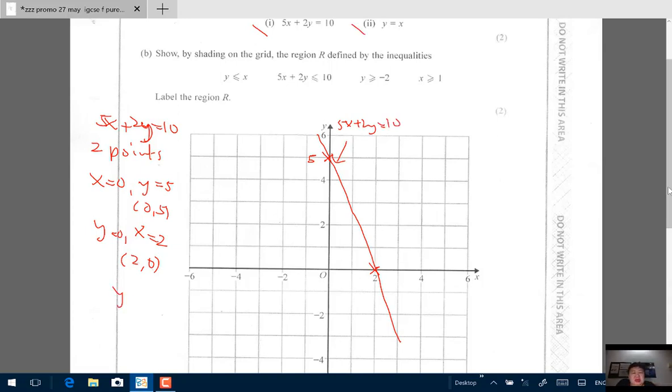y equals x is easy. It's a straight line where all the x and the y coordinates are the same, are equal. So you could pick (0,0), maybe you could pick (3,3) or (4,4), (5,5), (6,6). Pick your choice. So I pick (0,0) and maybe I'll pick (3,3). I'm going to join, and that line is y equals x.